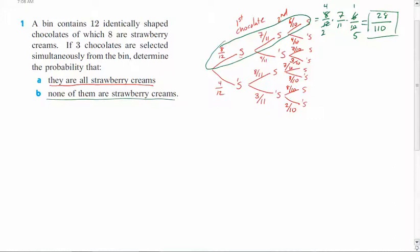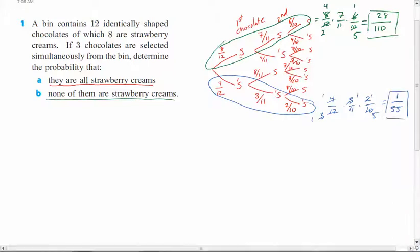Now, here's the probability that none of them are strawberry creams. And so this time, you're looking for the path where none of them are. So none, none, none. So this is the path that none of them are strawberry creams. Again, we're going to multiply them together. 4 over 12 times 3 over 11 times 2 over 10. So again, these reduce to 1 over 3. The 3s reduce. The 2 reduces to 1 over 5, which leaves us with 1 over 55. So there you go. There's the probability that none of them are strawberry creams.